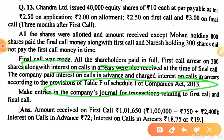The company paid interest on calls in advance and charged interest on calls in arrear according to the provision of Table F. The maximum rate of interest on calls in arrear is 10% and on calls in advance is 12%, as mentioned in Table F of Schedule I of the Companies Act 2013. We have to make the journal entries related to this.